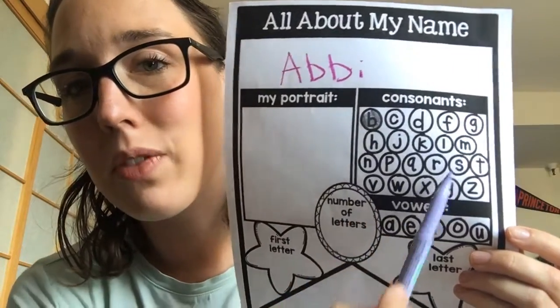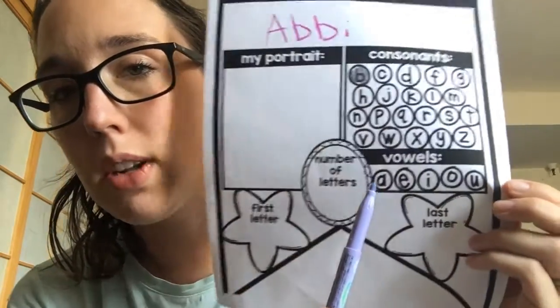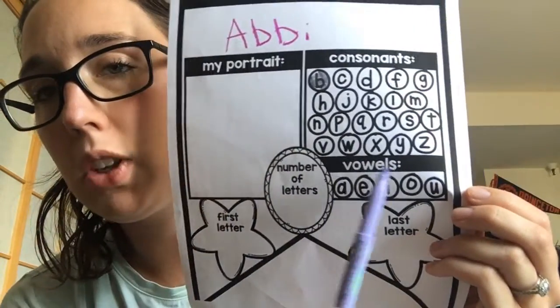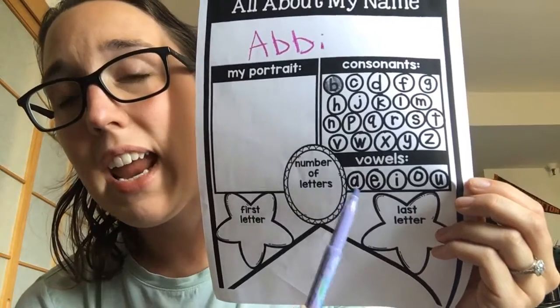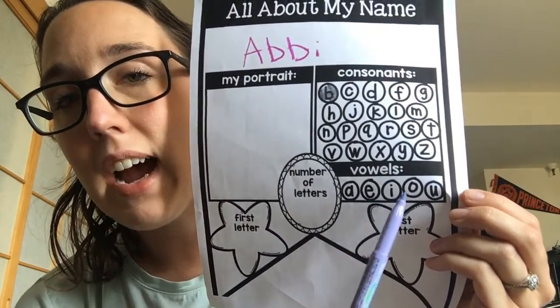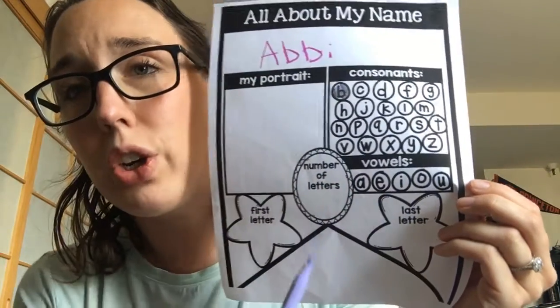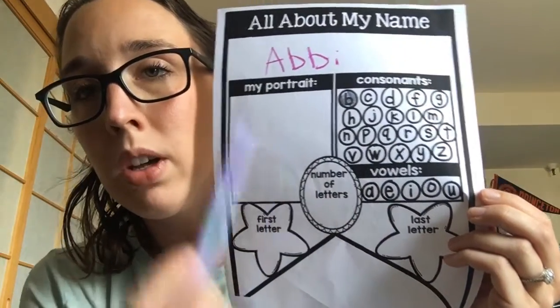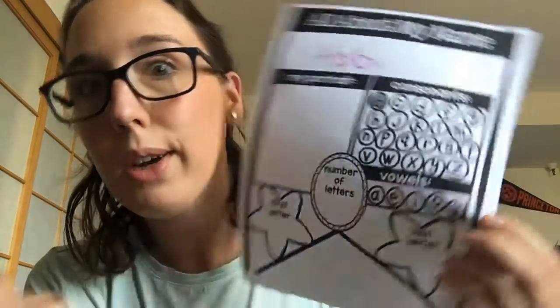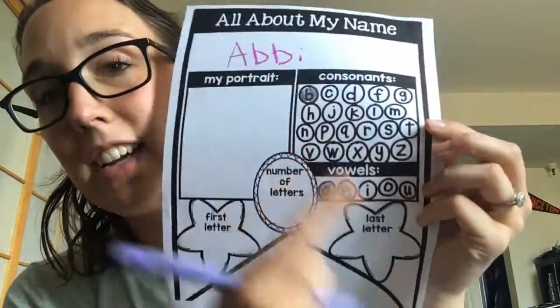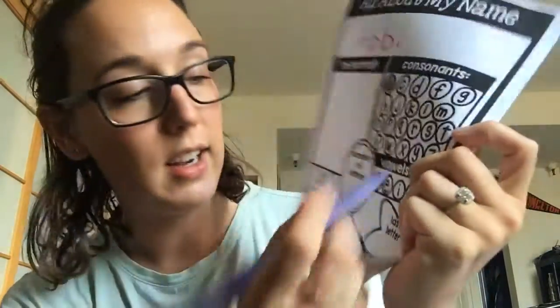Now I don't have any more of those letters, so I'm going to go down to this one and look at the vowels. Do I have any A, E, I, O, or U in my name? Well, I start with an A, so I can highlight an A. And I also have an I, so I can highlight an I.